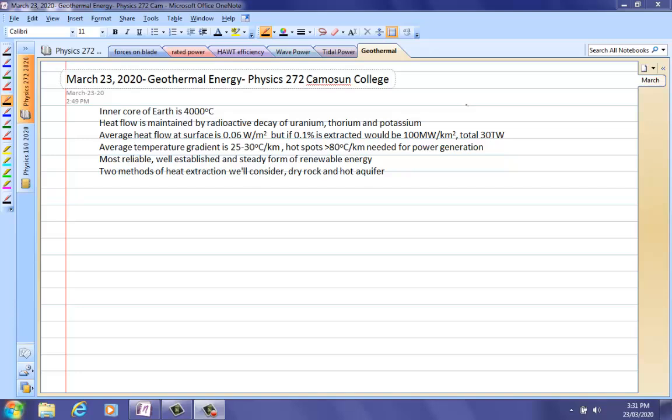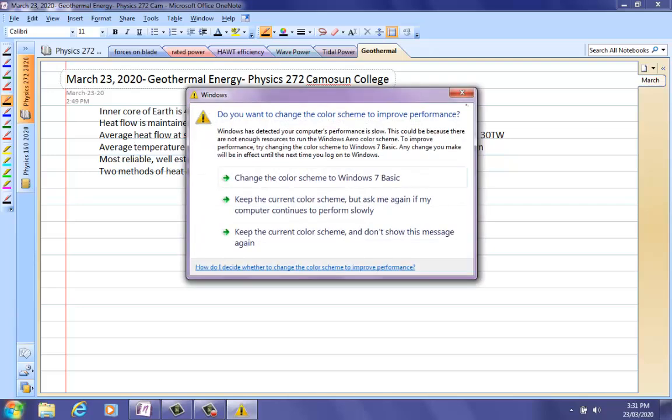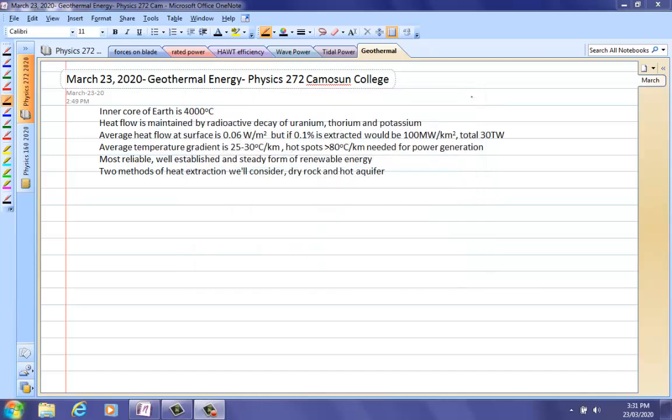The average temperature gradient is 25 to 30 degrees Celsius per kilometer, which is not useful for extracting power or doing anything with really. So you need to be at a hot spot if you're going to extract geothermal energy. That usually occurs at tectonic plate boundaries, of which BC sits, called the Ring of Fire. However, it is also a dangerous place to put geothermal plants because of the risk of earthquakes. But there are still many places around the world that are generating power from the temperature gradient as you go down in the earth.